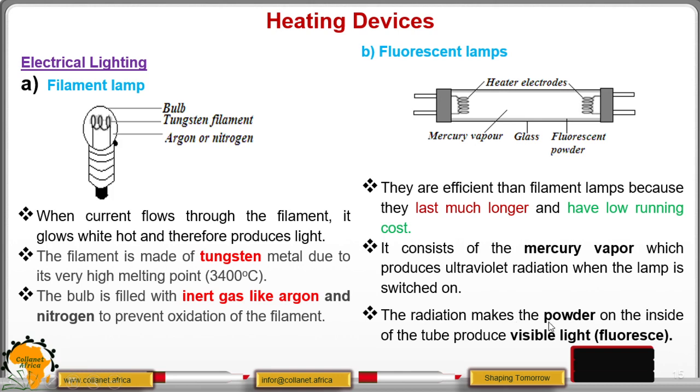These radiations make the powder on the inside of the tube to produce visible light or to fluoresce or to glow. And by so doing, you find that now light will be produced.